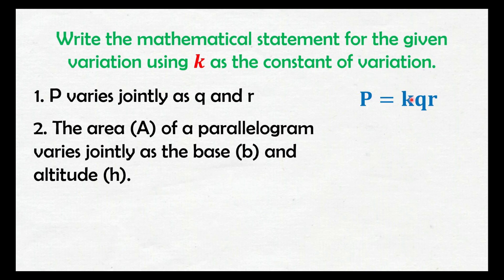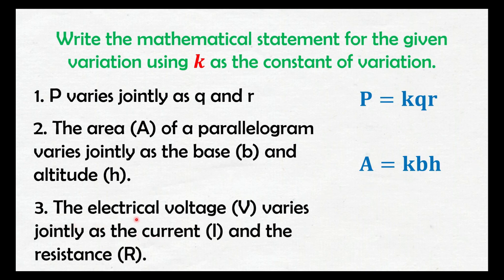Number two: the area of a parallelogram varies jointly as the base b and altitude h. Naunang nabanggit yung area na A, so ito yung nasa left side. Tapos itong b and h, sila yung nasa right side — jointly yan, ipagmumultiply natin yung b, h, kasama yung k. Magiging A equals kbh. Number three: the electrical voltage V varies jointly as the current I and the resistance R. So unang nabanggit itong V — ito yung nasa left side — at yung IR naman ang nasa right side, kasama yung constant. So, pagmumultiply natin yung tatlo. Makukuha natin ay V equals KIR.